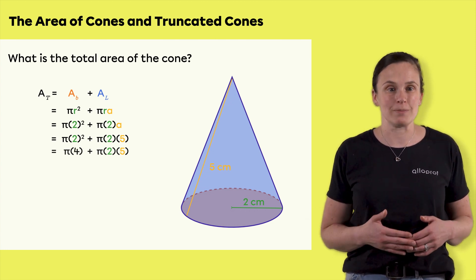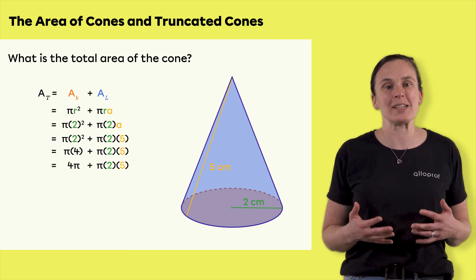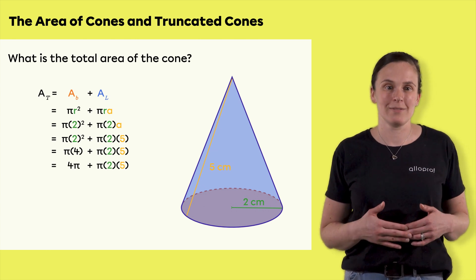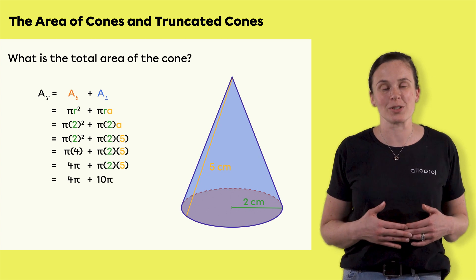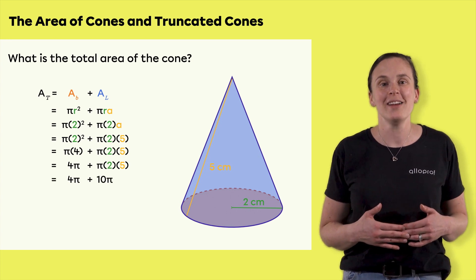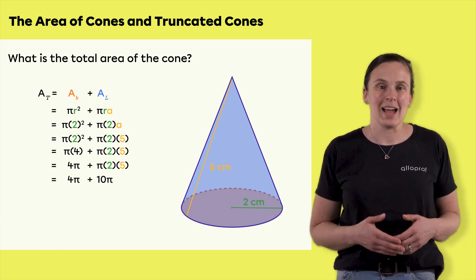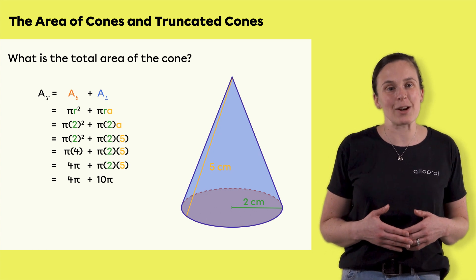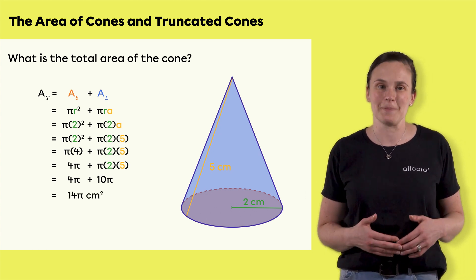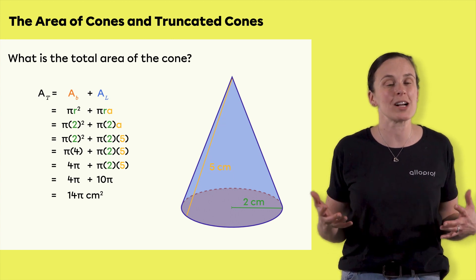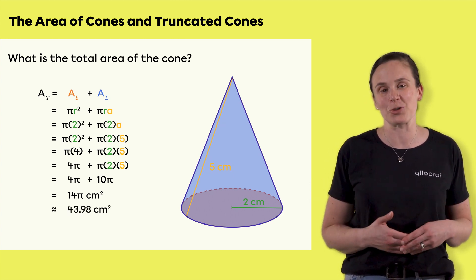Two squared equals four, so four pi is the cone's base area. Next, you calculate pi times two times five, which equals ten pi. This is the lateral area of the cone. Adding the area of the base to the lateral area gives a total area of fourteen pi centimeters squared, which equals approximately 43.98 centimeters squared.